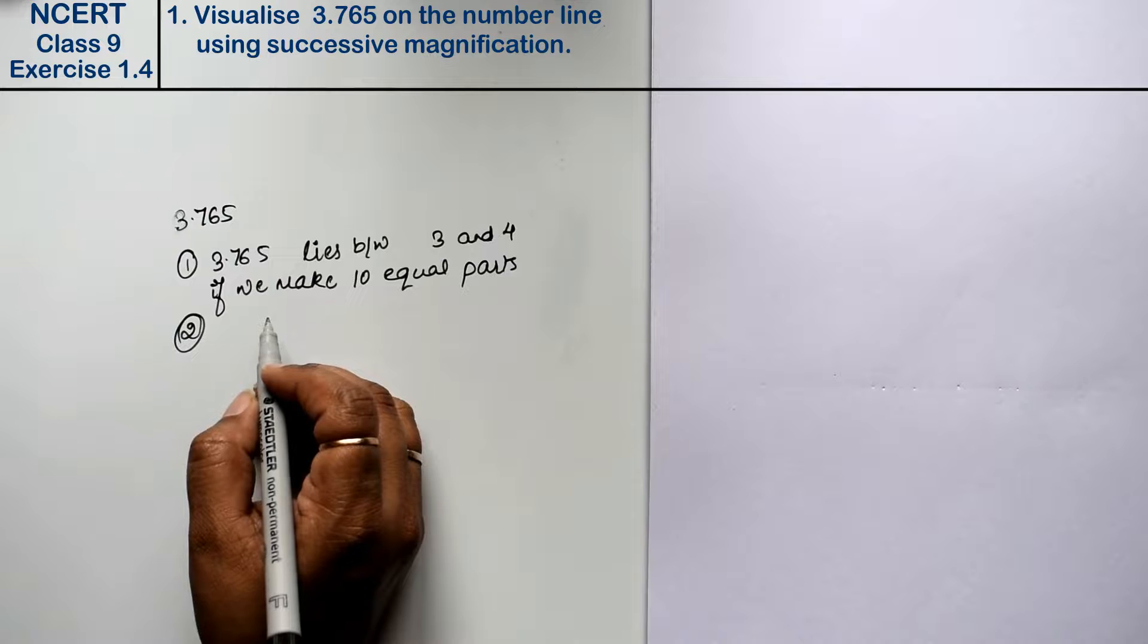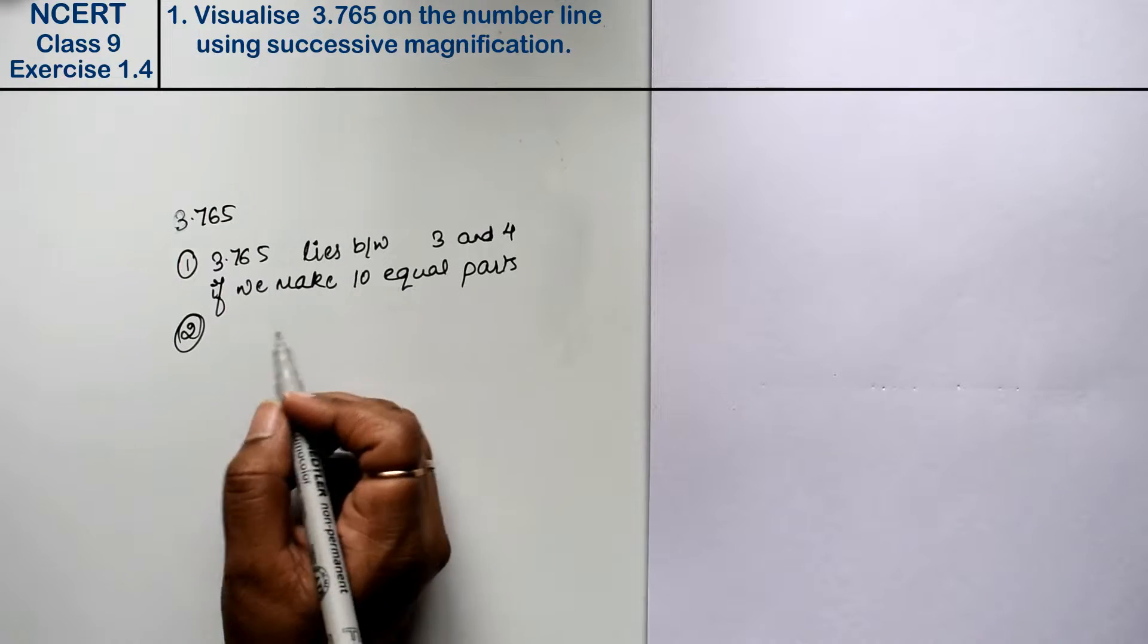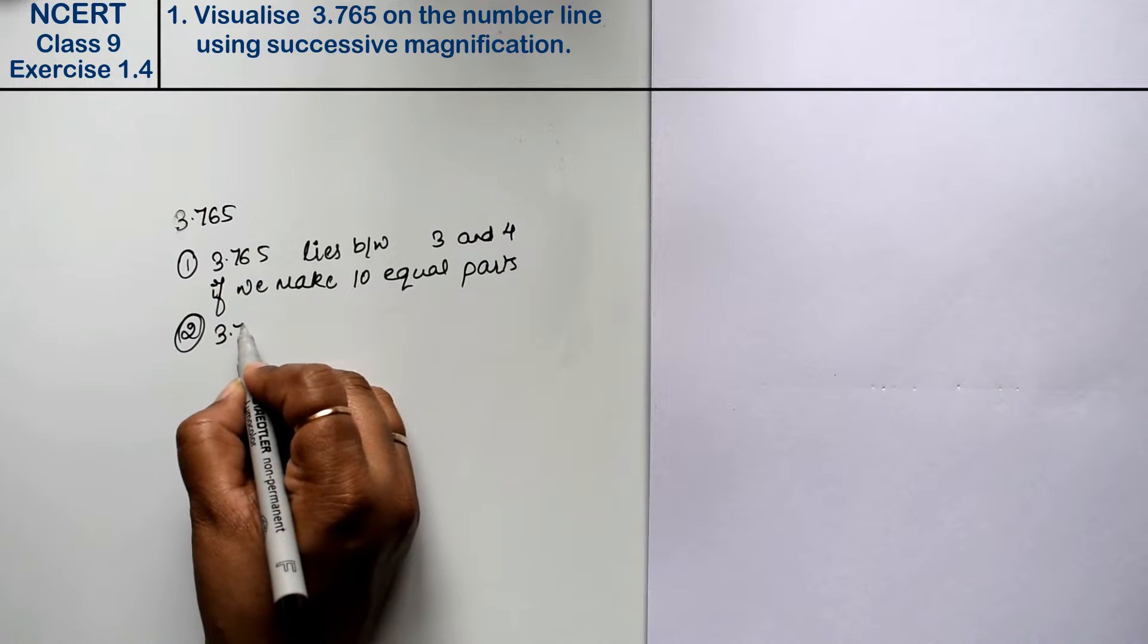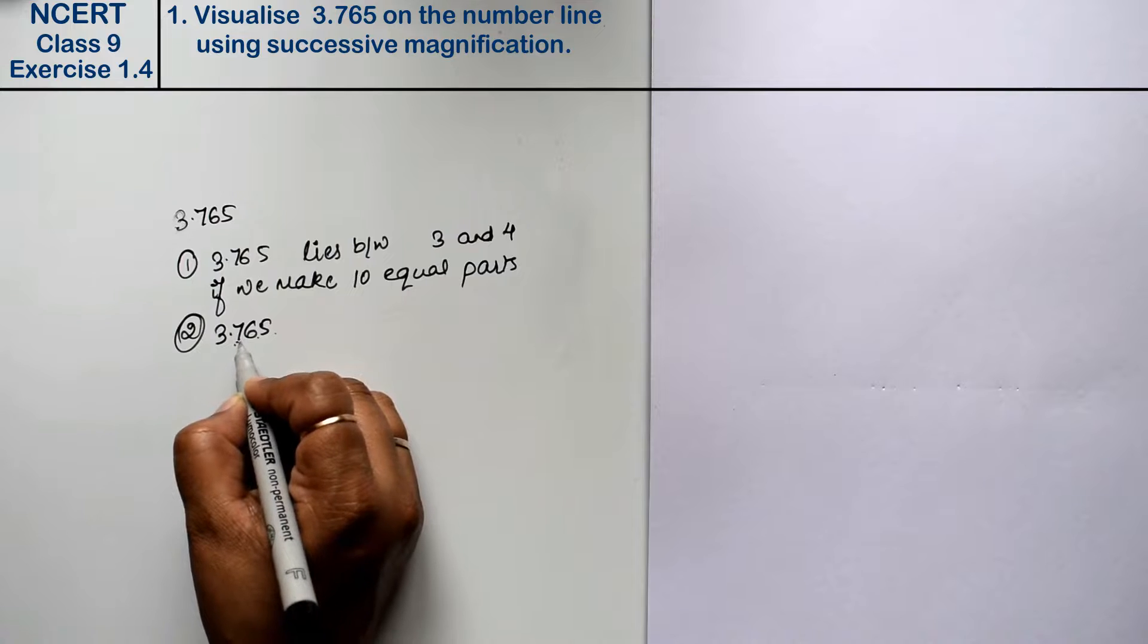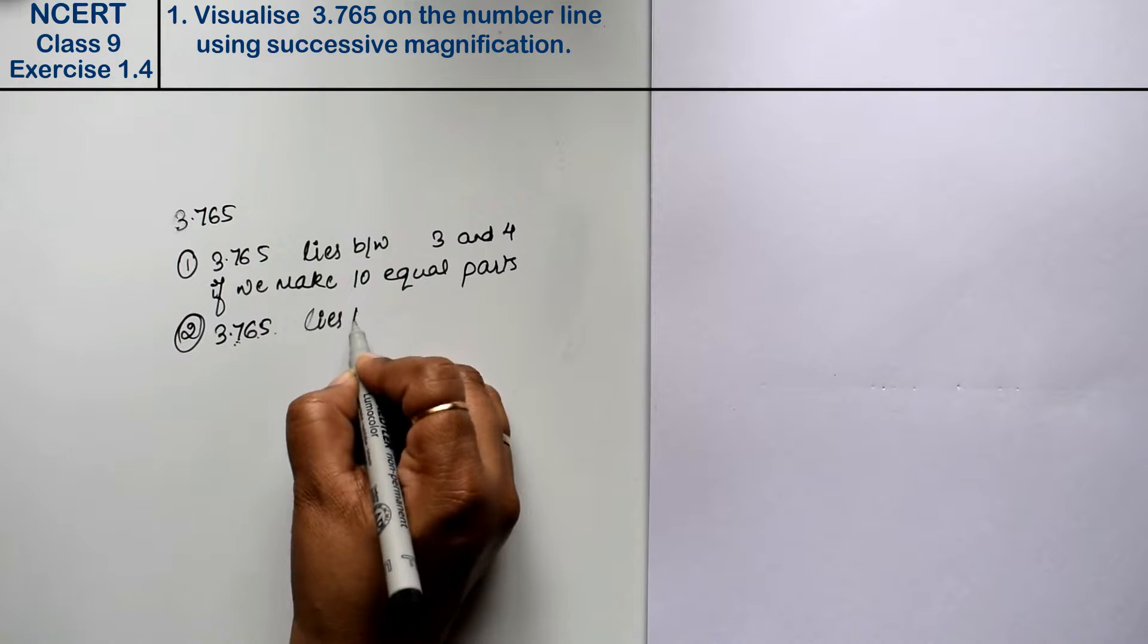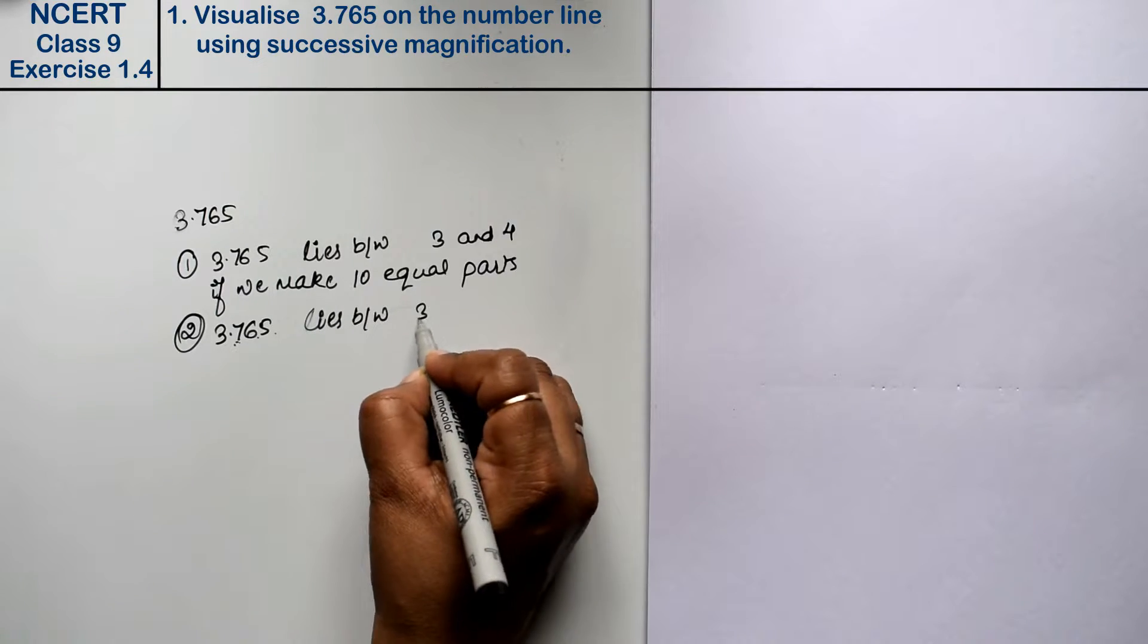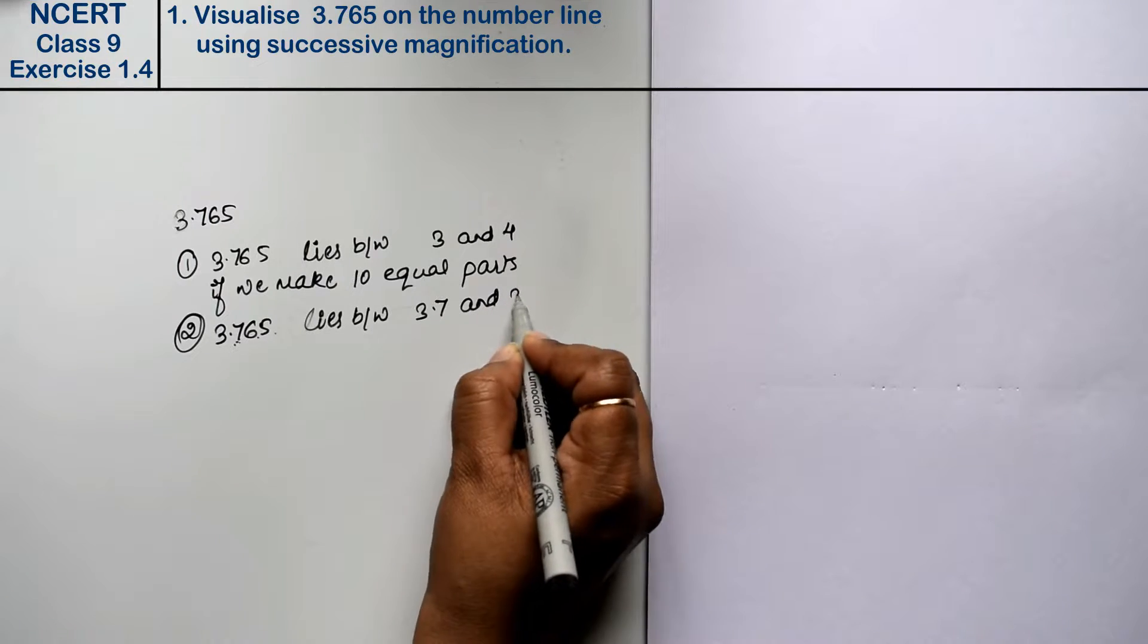If we look at the second point, we will put in the first part between 3 and 4. Then it is 3.765, so between 3.6 and 3.7, or 3 lies between 3.7 and 3.8.